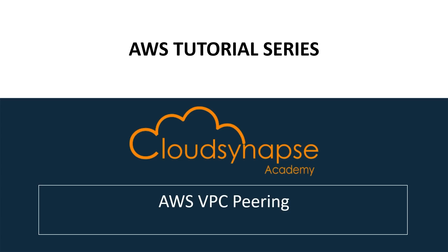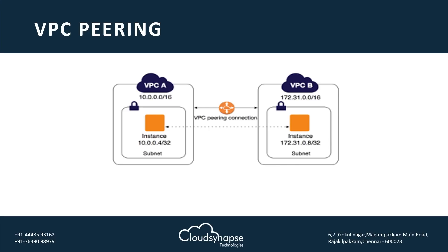Hello everyone, welcome back to Cloud Synapse Academy. In this session we are going to discuss AWS VPC peering. Why do we need VPC peering? Imagine you have an application deployed in private subnets, and those servers are in two different regions or different VPCs. The private subnets don't have internet access, but we can still connect them by creating a VPC peering connection.